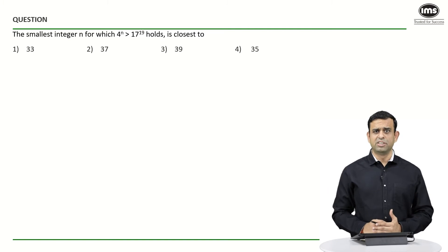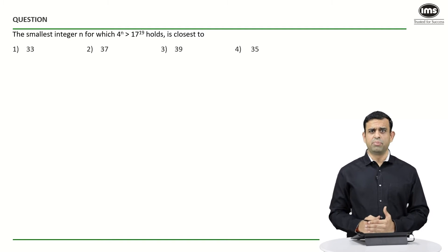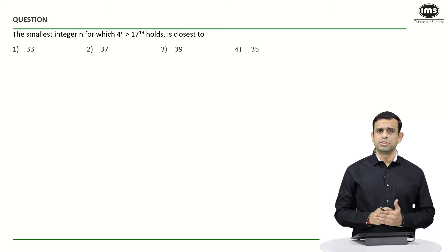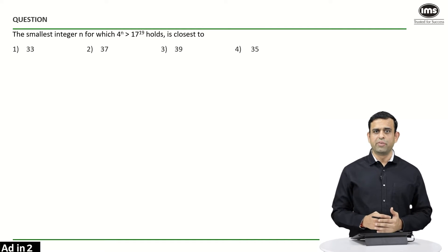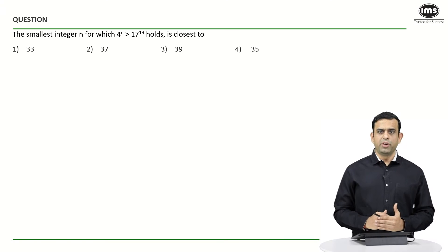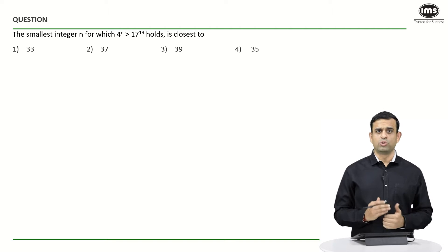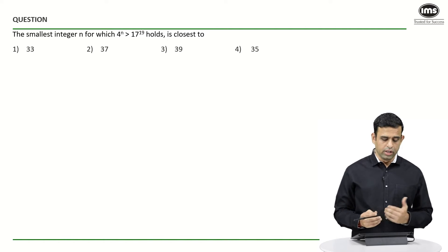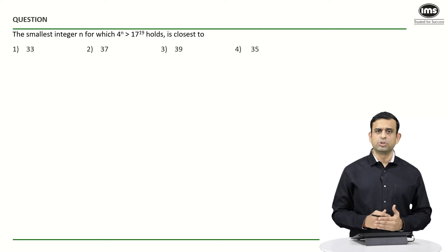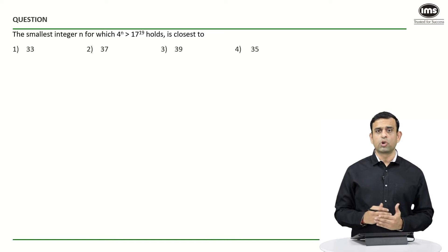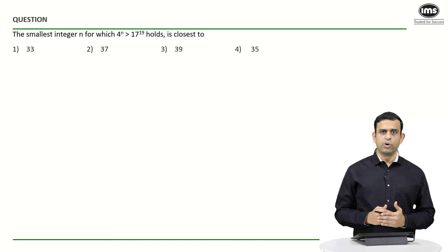Hi all, welcome to the Best of CAT series by IMS. Today we are going to look at a sum basically from the concept of number system. Kindly give it a try and then resume the video once you are done with it. The question says: the smallest integer n for which 4 raised to n will be more than 17 raised to 19 holds good — closest to which value? It's a very nicely framed question.